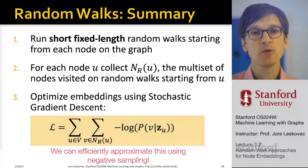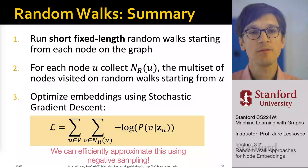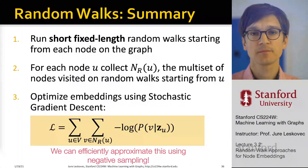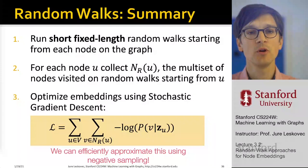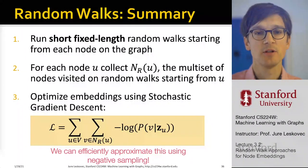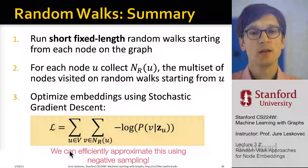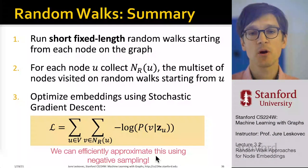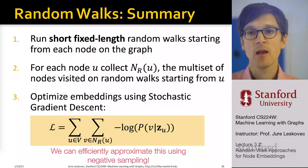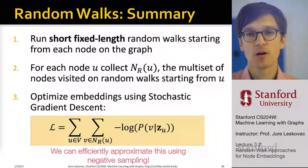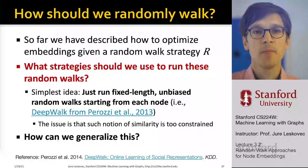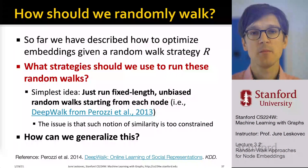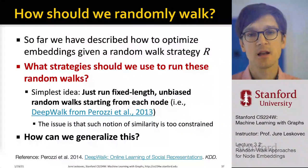To summarize: we run short fixed-length random walks starting from each node on the graph. For each node u, we collect its neighborhood N as a multi-set of nodes visited on random walks starting from node u. We then optimize these embeddings using stochastic gradient descent, finding coordinates z that maximize the objective. We efficiently approximate this using negative sampling, where we sample negative nodes with probability proportional to their degree and in practice sample about 5 to 20 negative examples for every node at every step.